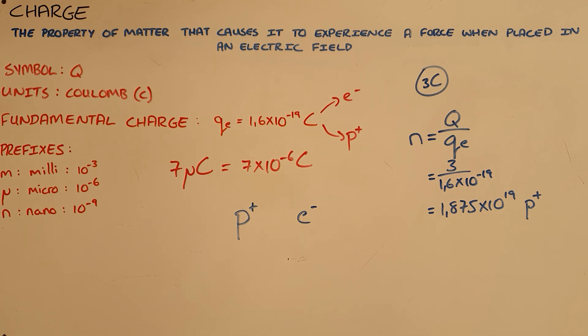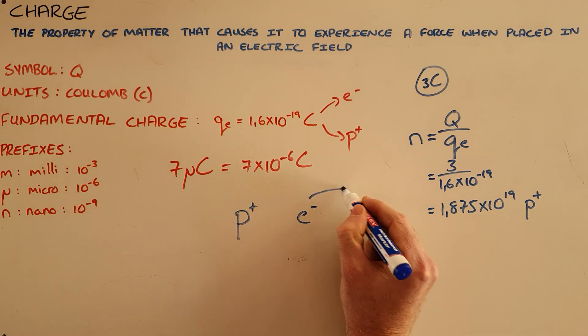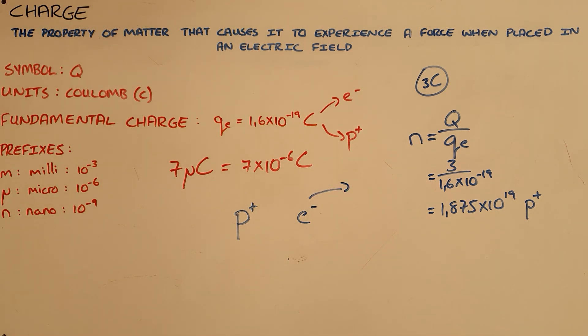However, protons, since they are inside the nucleus of the atom, are never able to move. So whenever we talk about the transfer of charge, we are always going to be talking about electrons that are able to move. The electrons would obviously always move from the more negative charge to the less negative charge because they are attracted to the positive charges in another object.